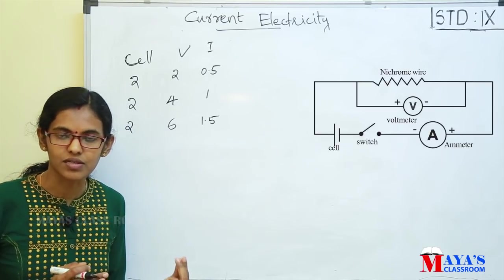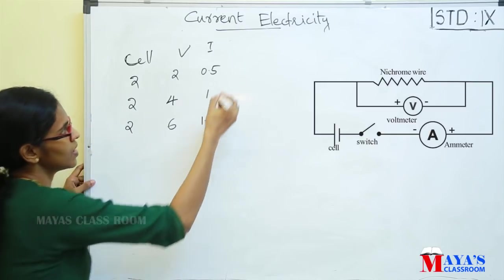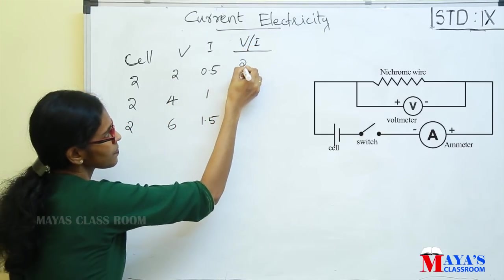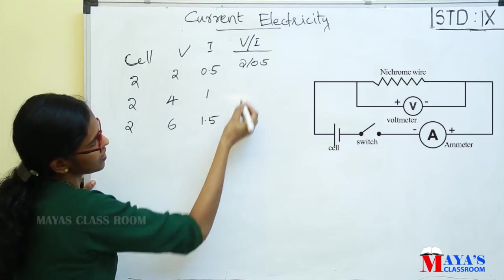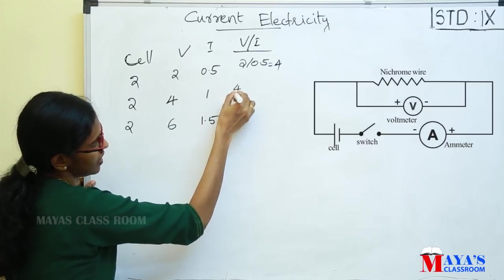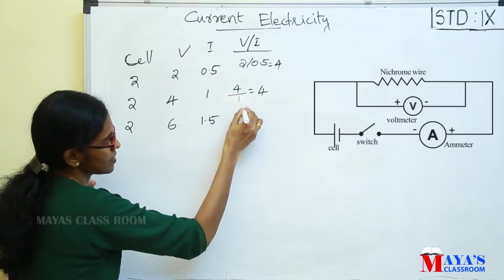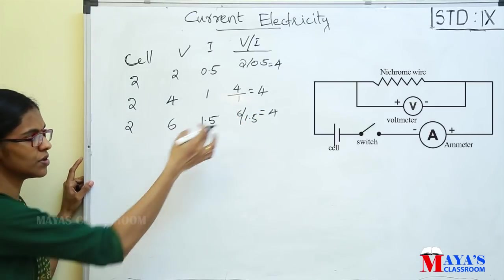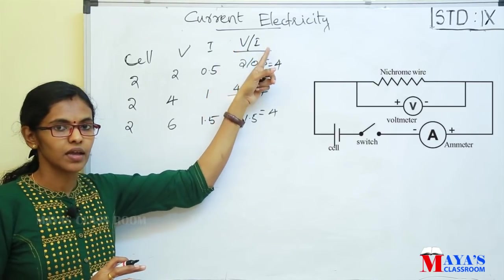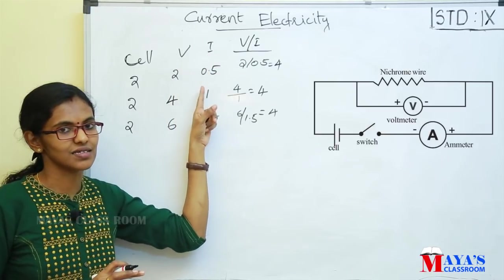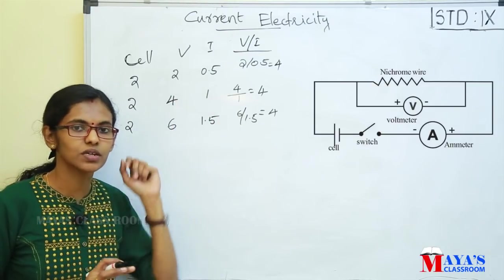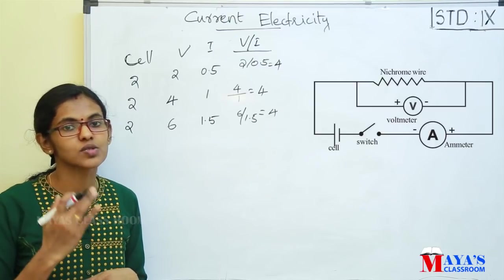So we divide the voltage by the current, that is V by I. In all cases, we divide voltage by the corresponding current and we get a constant value.